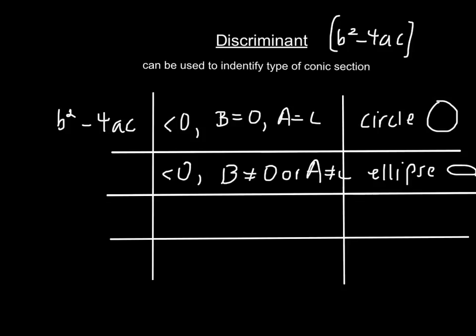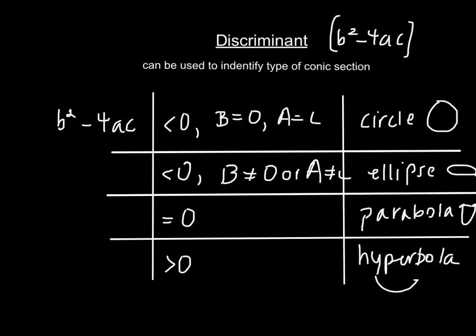If b squared minus 4ac equals 0, we have a parabola. And if b squared minus 4ac is greater than 0, we have a hyperbola. This is if a problem will ask you what type of conic section something is and you don't necessarily need to graph it. You can just use the discriminant.